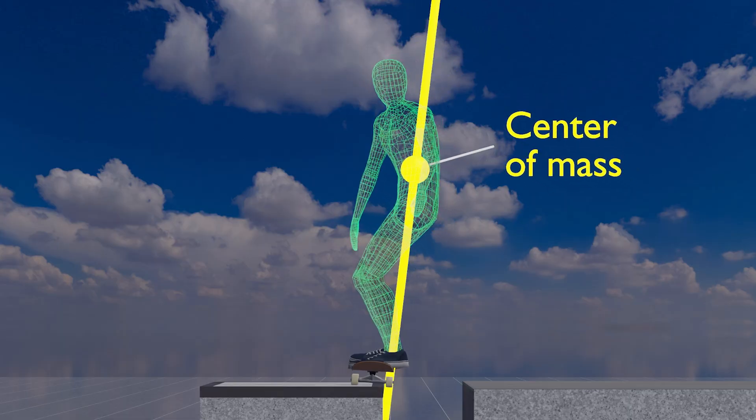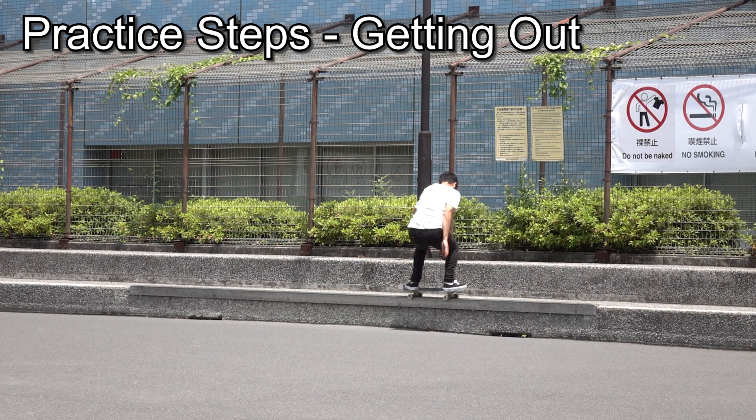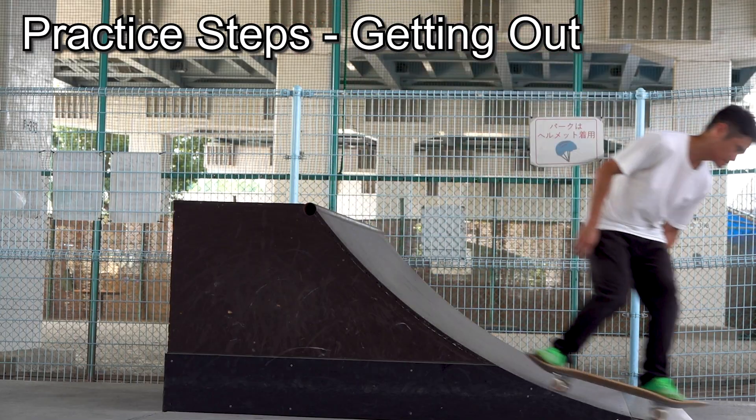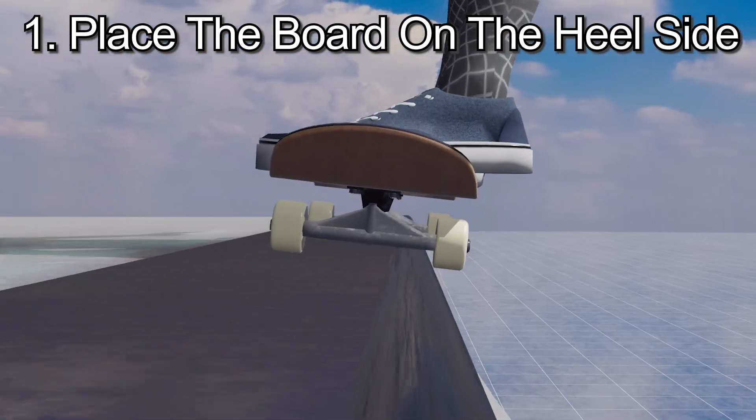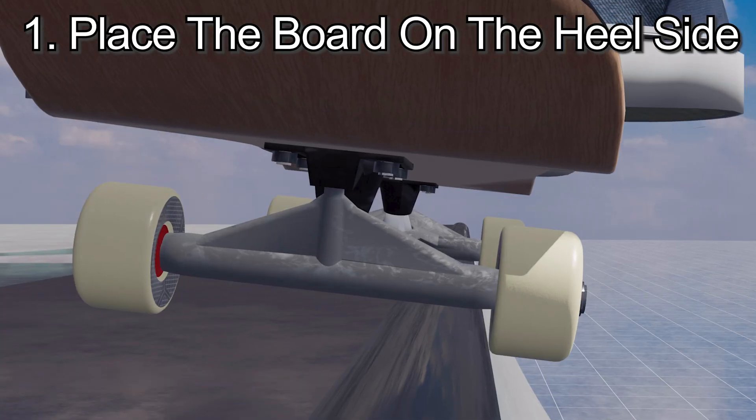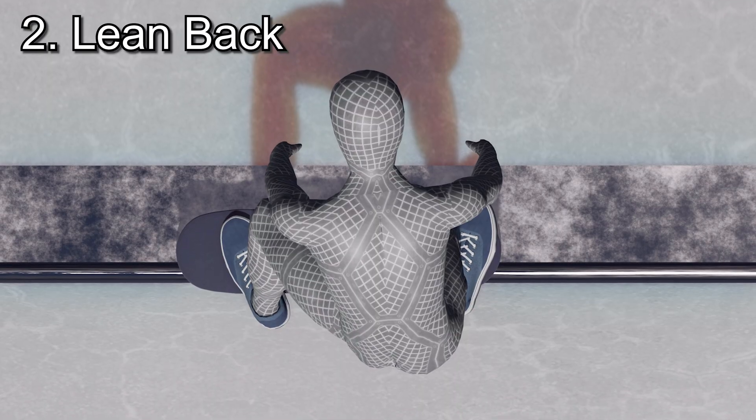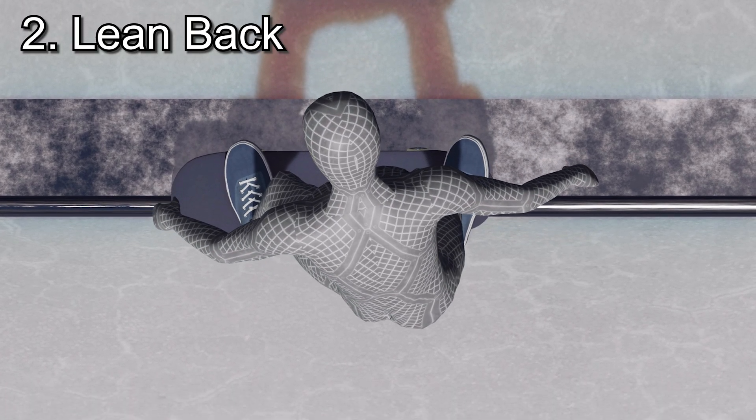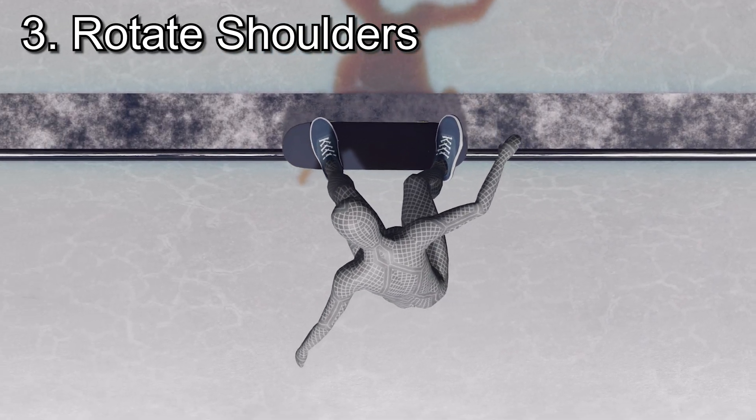This difference is what throws people off. That said, here's a way to get used to the feeling of coming off the grind. Place your board on the coping so both trucks heel sides are touching the coping. Start leaning back, so you will bring your body weight back to the inside of the ramp. Add a slight shoulder rotation, and you'll be able to come back in.